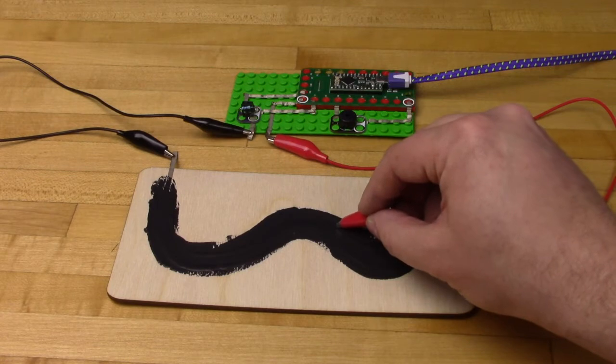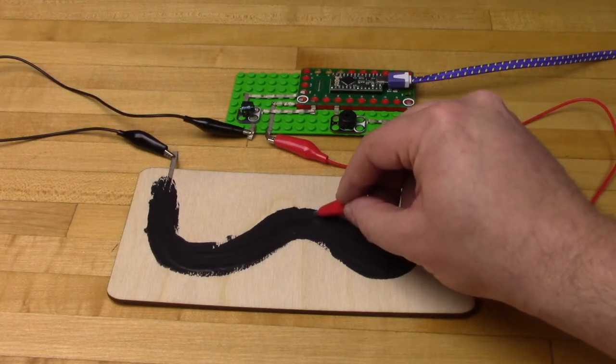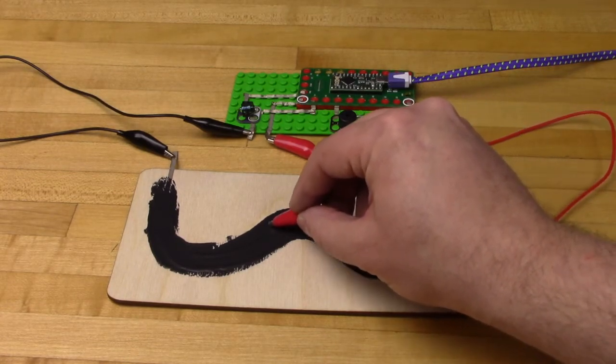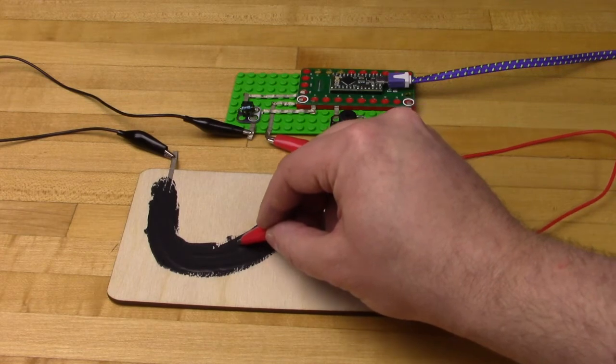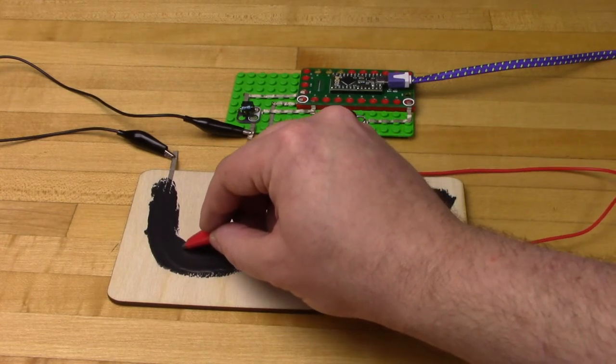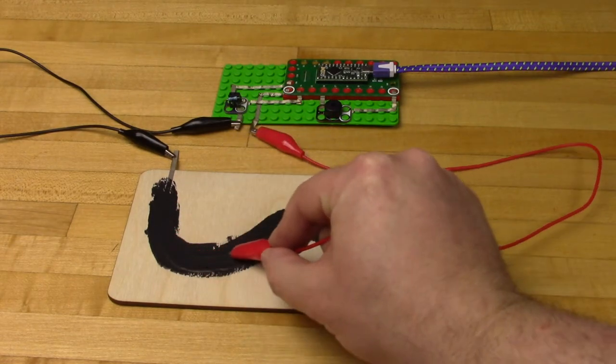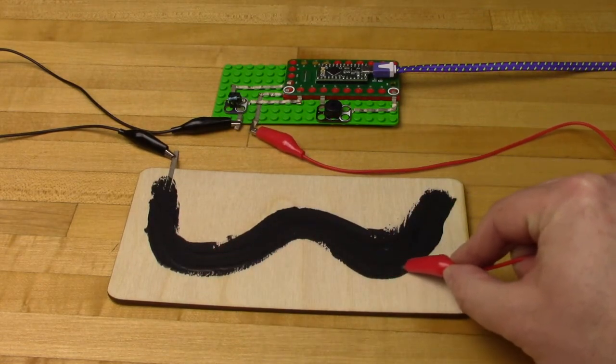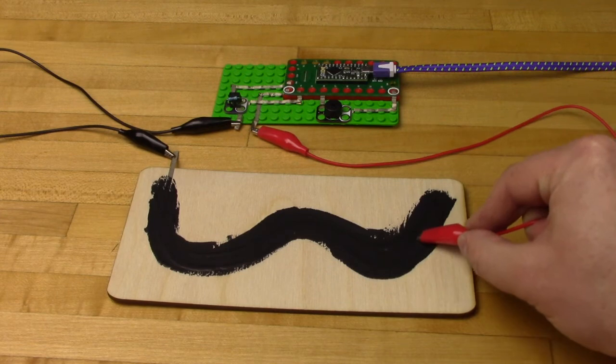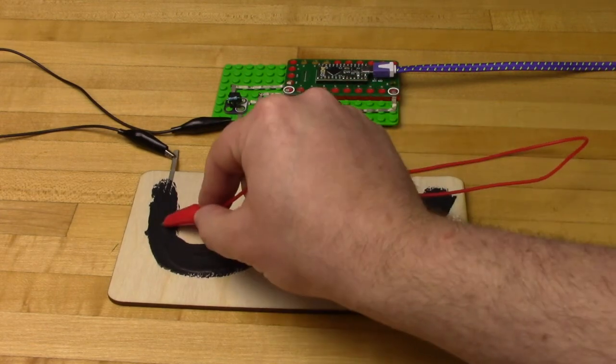The really cool thing about this project is you can apply this exact same process to any Arduino project that uses a variable resistor. This can be used to control a servo or the blink of an LED. This makes everything a lot more interactive, a lot more hands-on, a lot more kid-friendly especially. It's just a fun way of interacting with electronics in a very tactile medium.